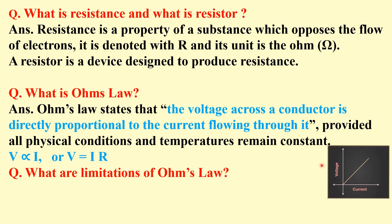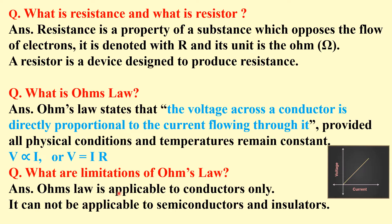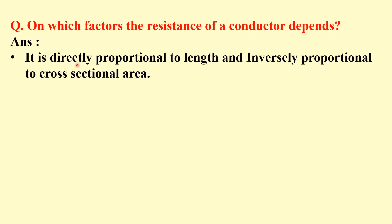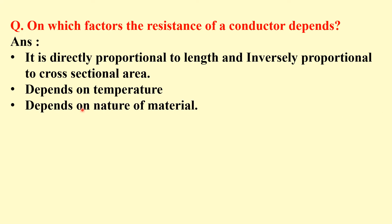What are the limitations of Ohm's law? Ohm's law is applicable to conductors only; it cannot be applied to semiconductors and insulators. On which factors does the resistance of a conductor depend? The resistance of a conductor is directly proportional to its length and inversely proportional to its cross-sectional area A. It also depends on temperature and on the nature or type of material.